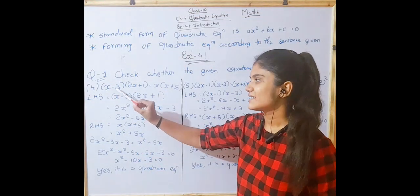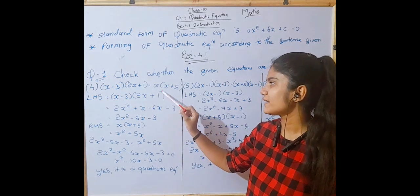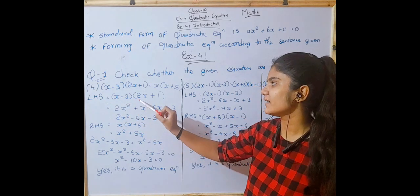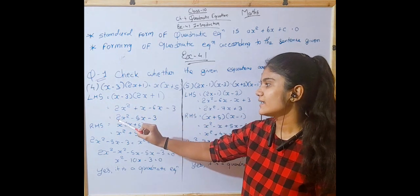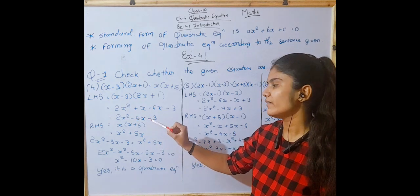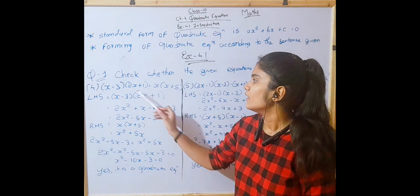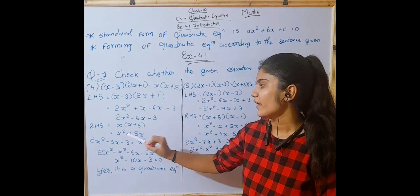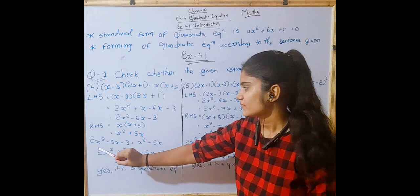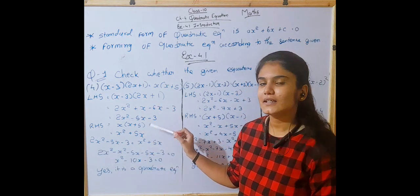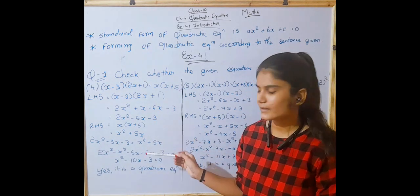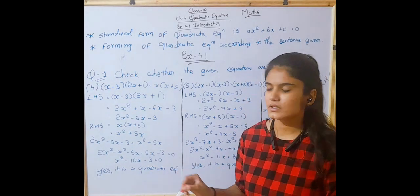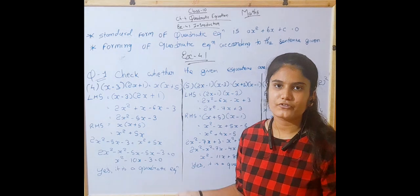Number 4: (X - 3)(2X + 1) = X(X + 5). We equate the left-hand side: (X - 3)(2X + 1) = 2X² - 5X - 3. The right-hand side: X(X + 5) = X² + 5X. Equating both together, we get X² - 10X - 3 = 0, which is a quadratic equation.